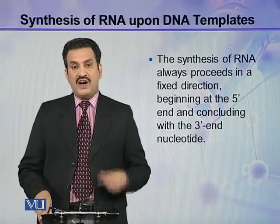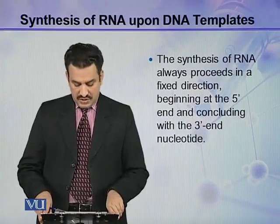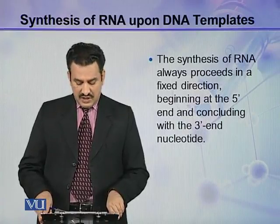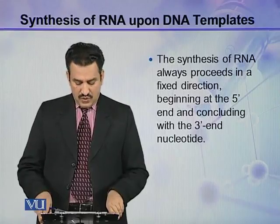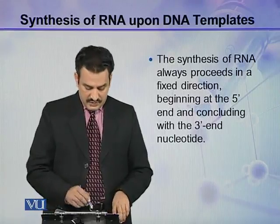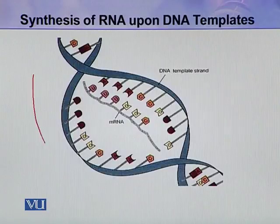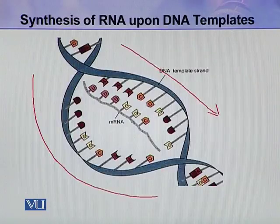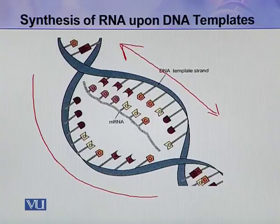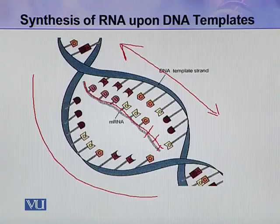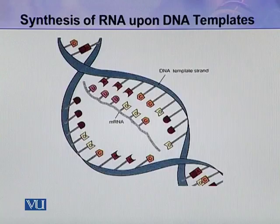The synthesis of RNA always proceeds in a fixed direction, beginning at the 5' end and concluding at the 3' end nucleotide — that is, from 5' to 3'. In the diagram, double-stranded DNA unwinds and makes a loop, and inside this loop the newly synthesized mRNA molecule is formed. Bases are added sequentially, and in this way the new RNA molecule is synthesized from the DNA template.